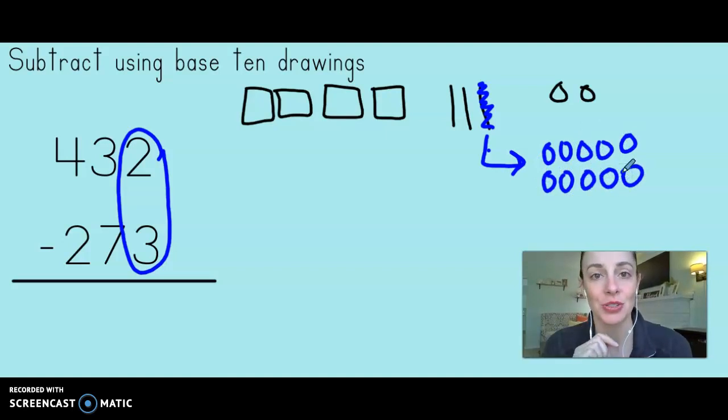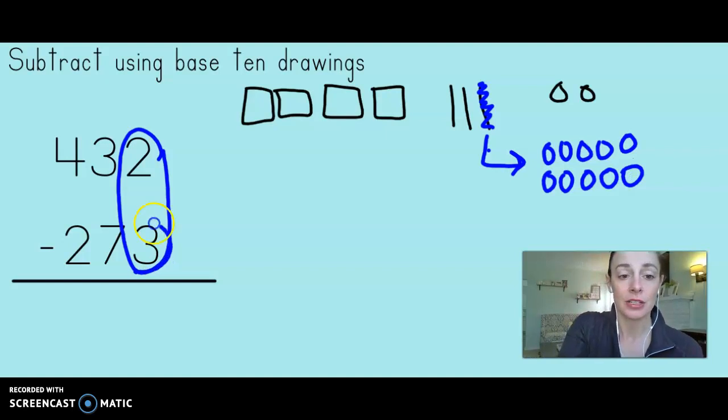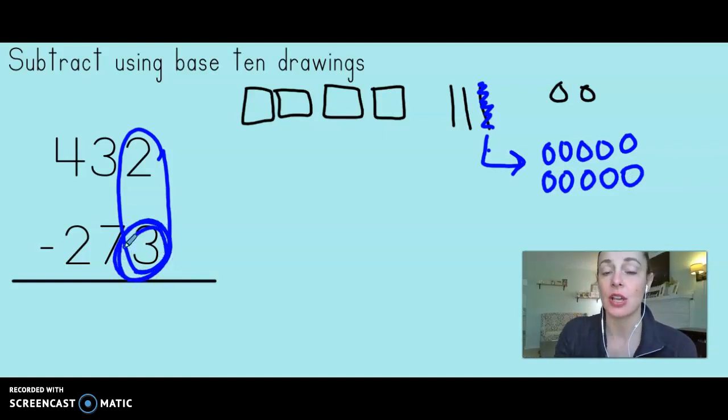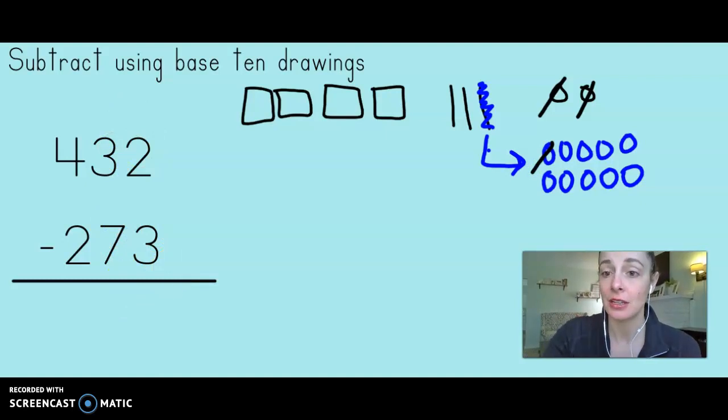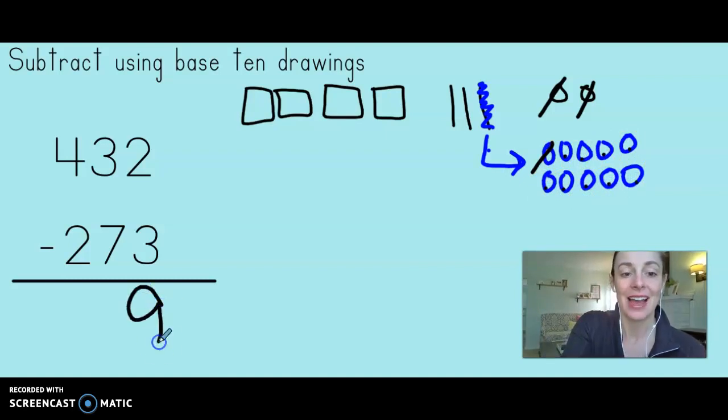Now I like to draw an arrow and don't forget to cross off that ten because if I ungroup it, it's no longer there. Let's give ourselves ten ones. Now I'm good to cross off. According to my problem, I need to cross off three of my ones. One, two, three. Second grade, let's count and see how many we have left. We have nine ones left after I've crossed off.